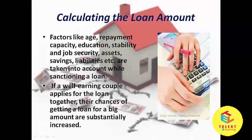When calculating the loan amount, factors like age, repayment capacity, education, stability and job security, assets, savings, liabilities, etc. are taken into account while sanctioning a home loan. If a well-earning couple applies for the loan together, their chances of getting a loan for a larger amount are substantially increased.